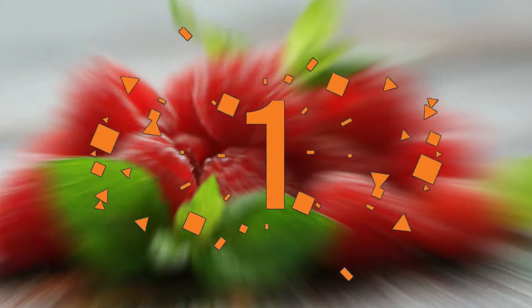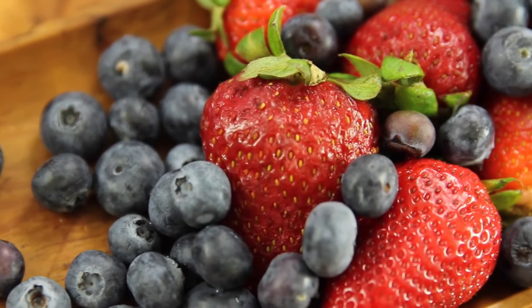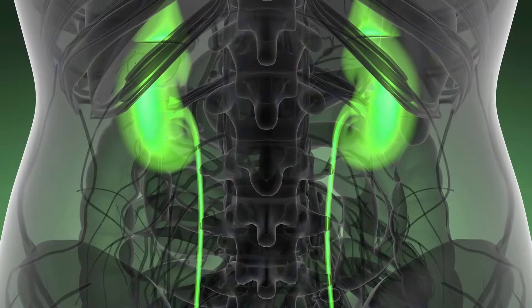Blueberries, raspberries, strawberries. All these delicious berries are loaded with antioxidants that fight inflammation and protect your cells, including those in your kidneys.